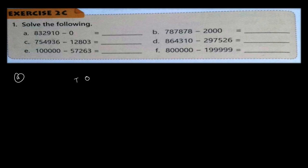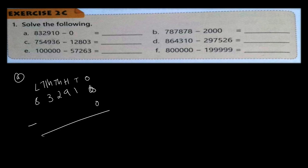Write down the number: ones, tens, hundreds, thousands, ten thousands, and lakhs. The number is 3,383,291 minus zero. Zero minus zero is zero, zero minus zero is zero — one comes down, nine comes down, two comes down, three comes down, and eight — so the answer is the same.